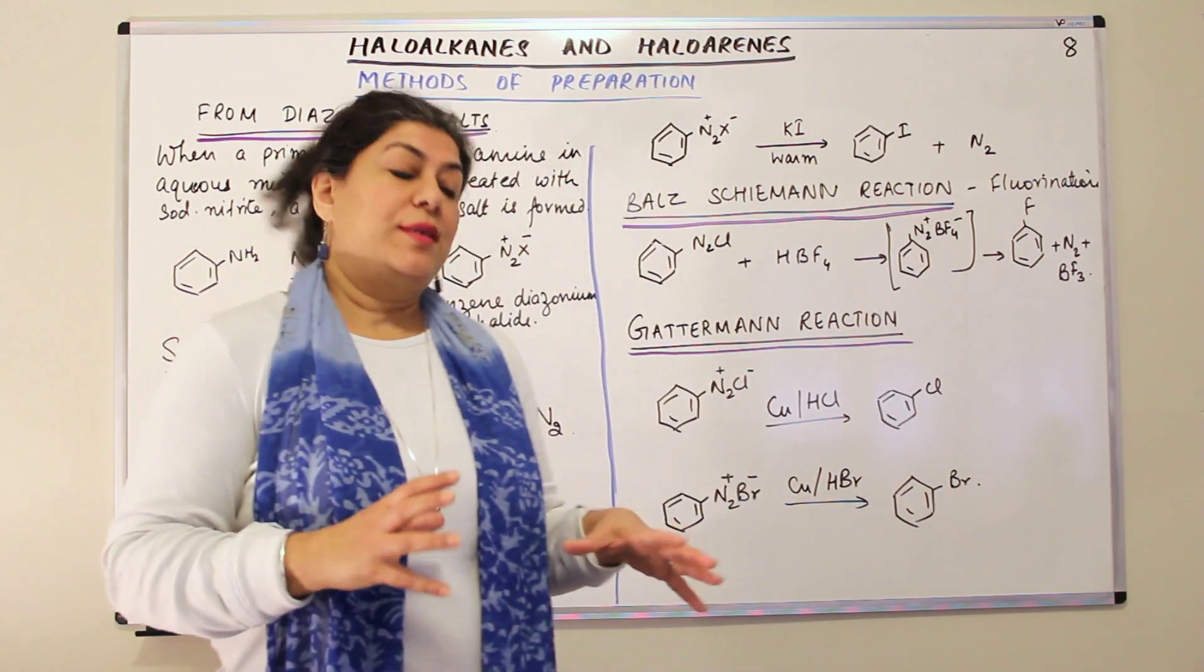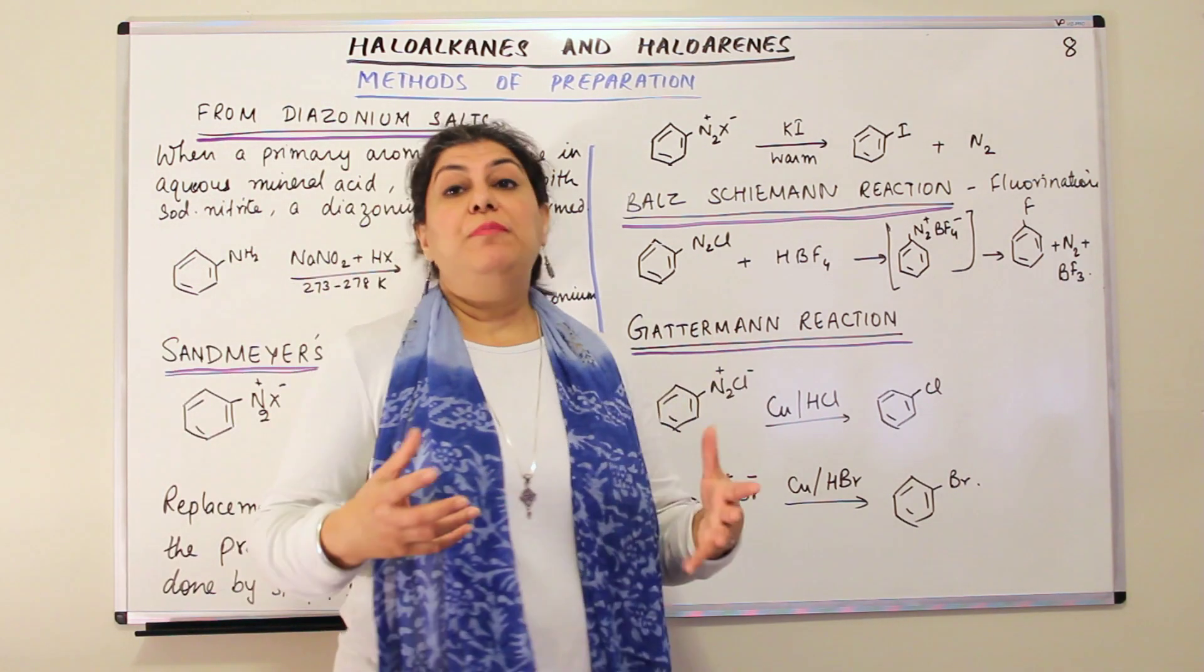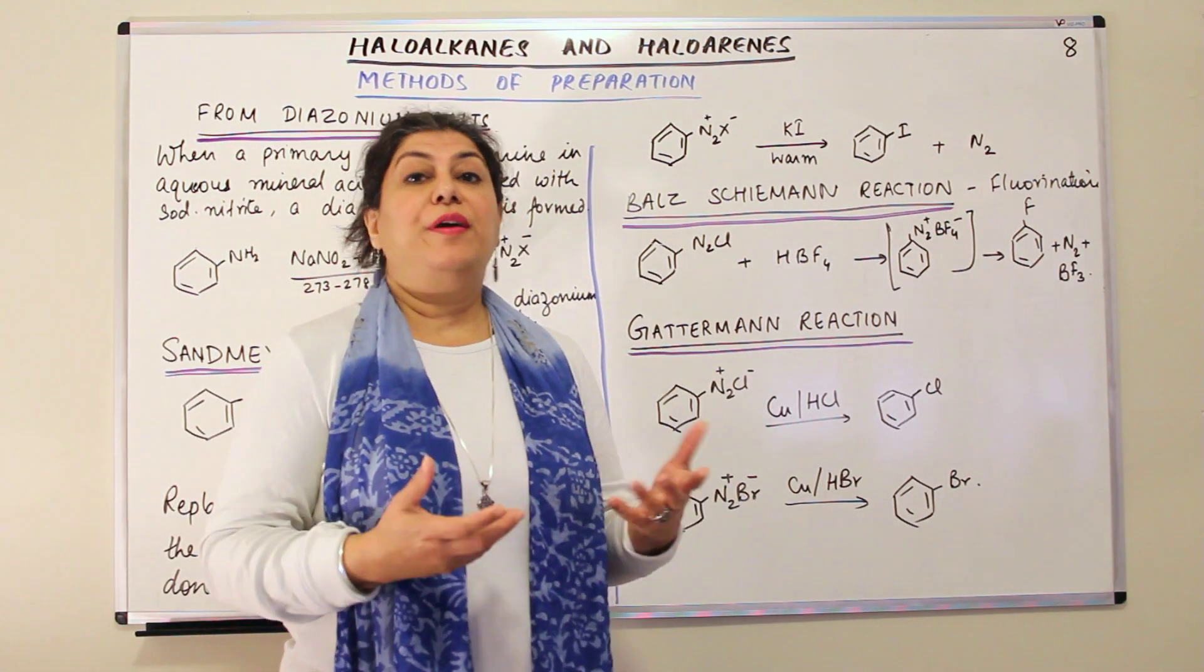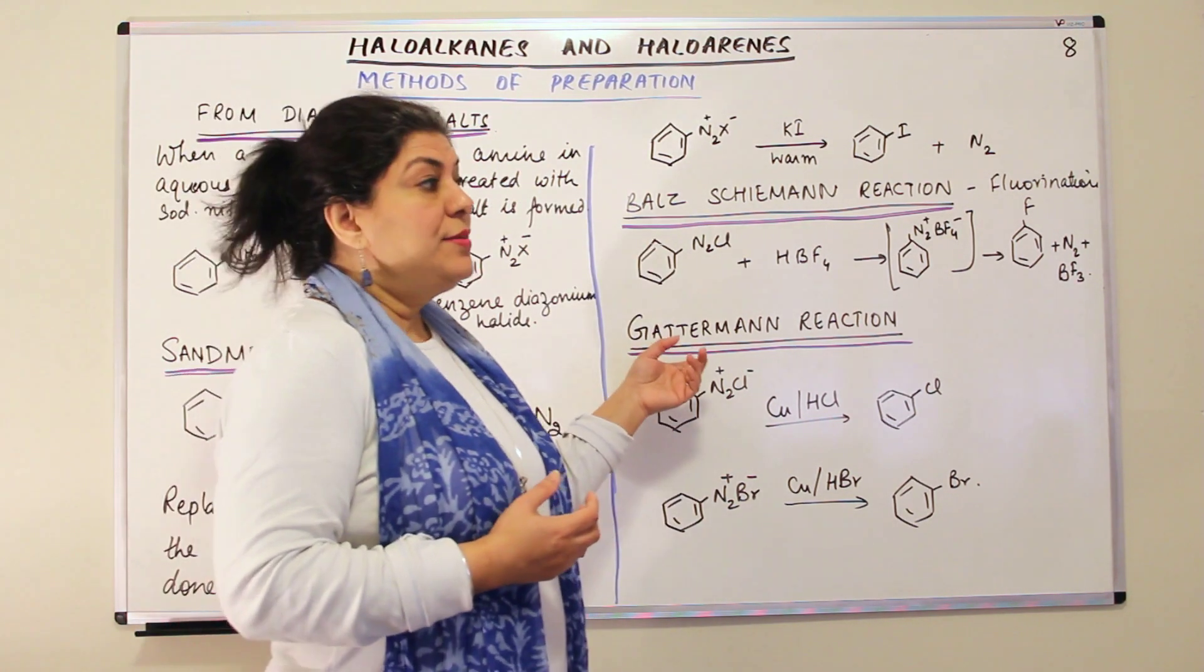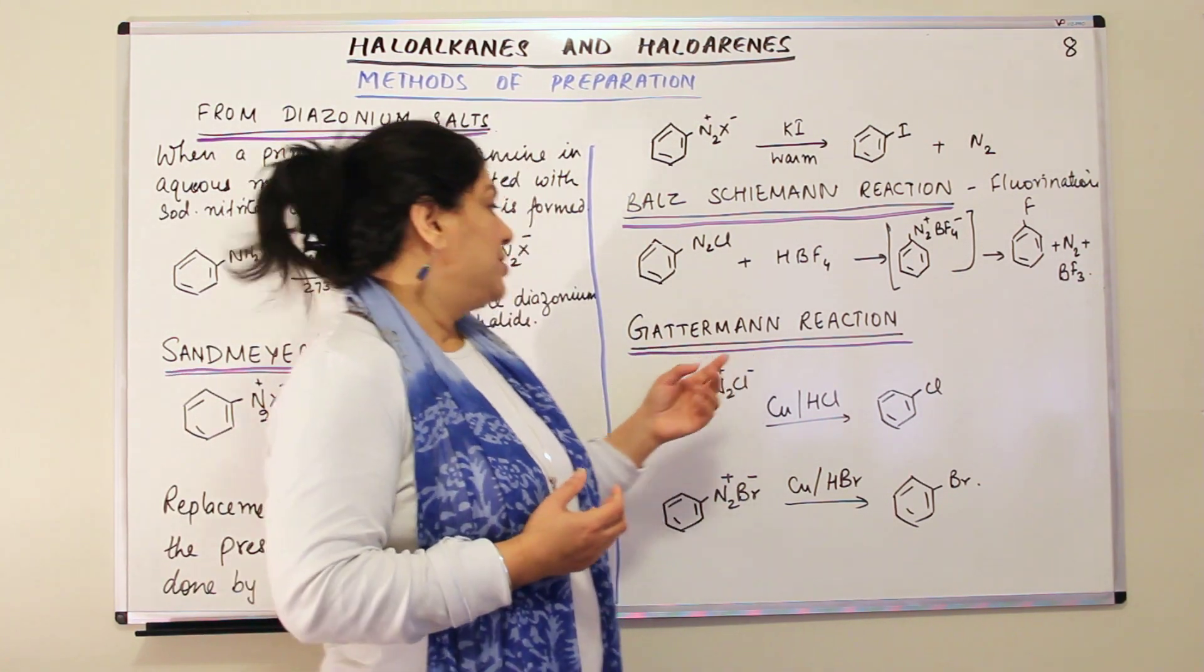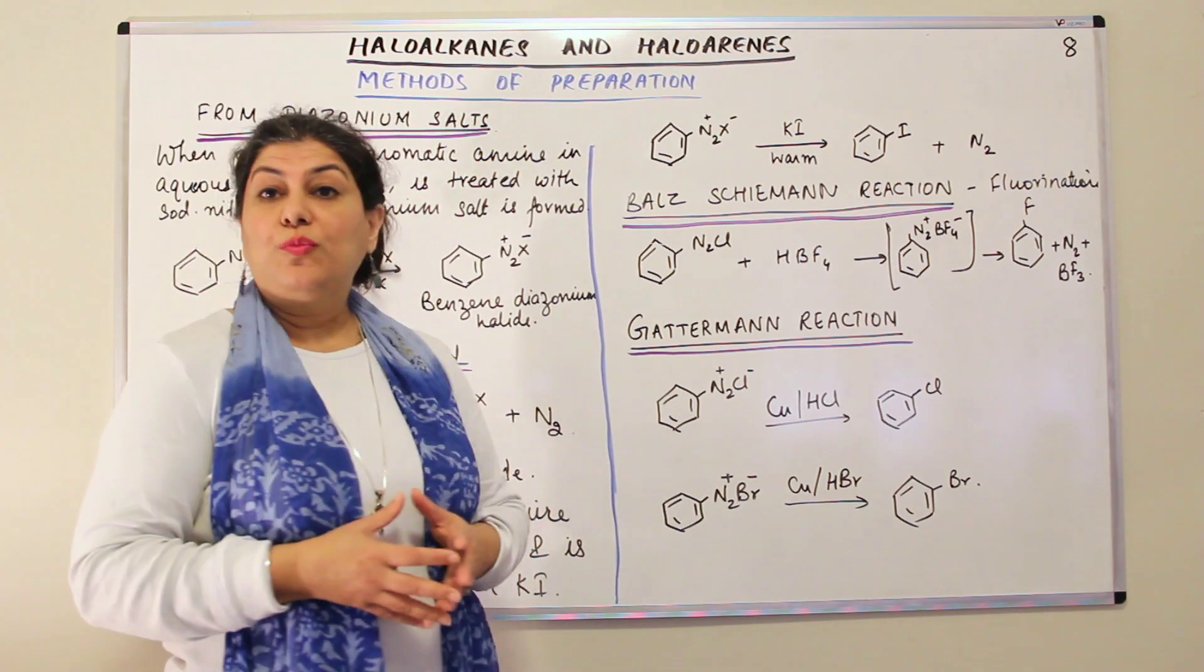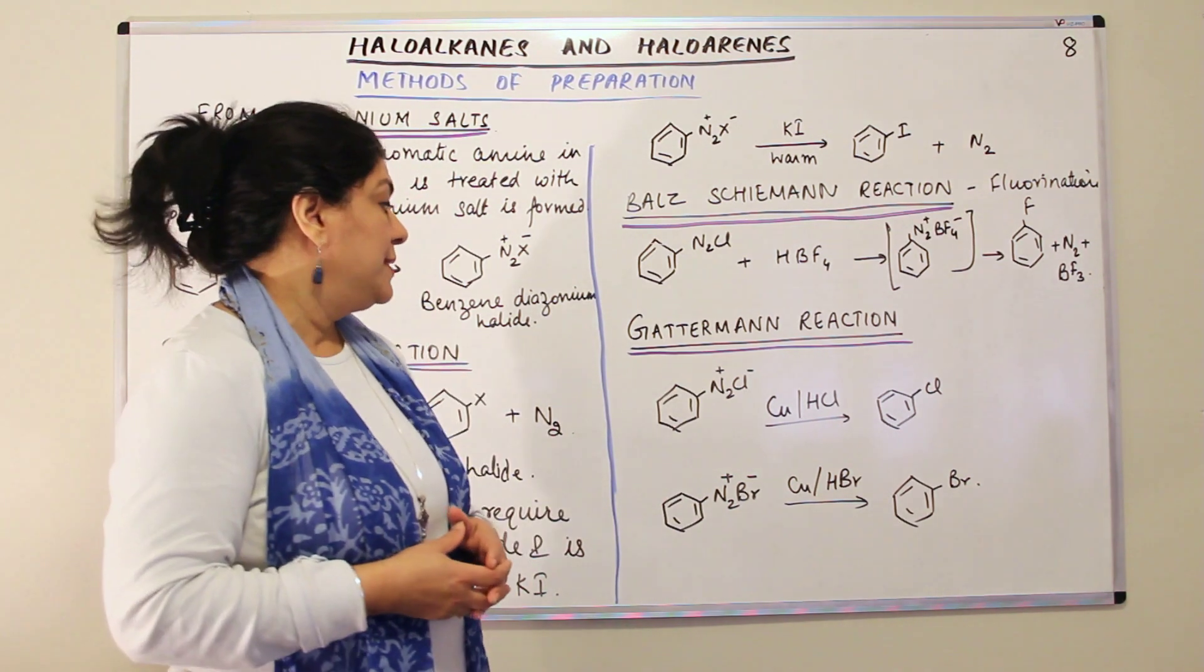Then comes another category. There is another, the third type of named reaction that is used for preparation of aryl halides with the use of diazonium salts. This reaction is known as the Gattermann reaction. What happens in the Gattermann reaction? What is done here?